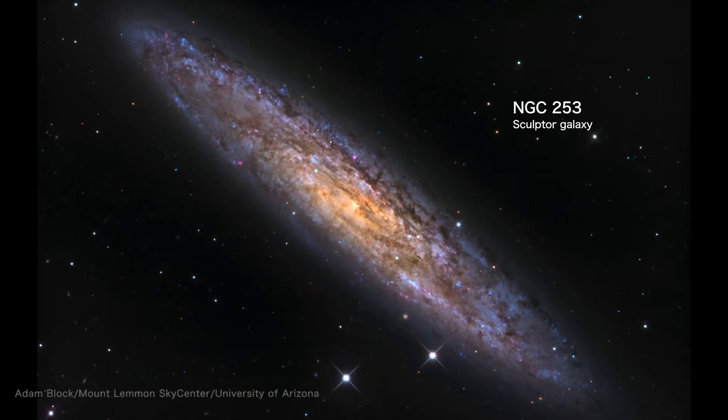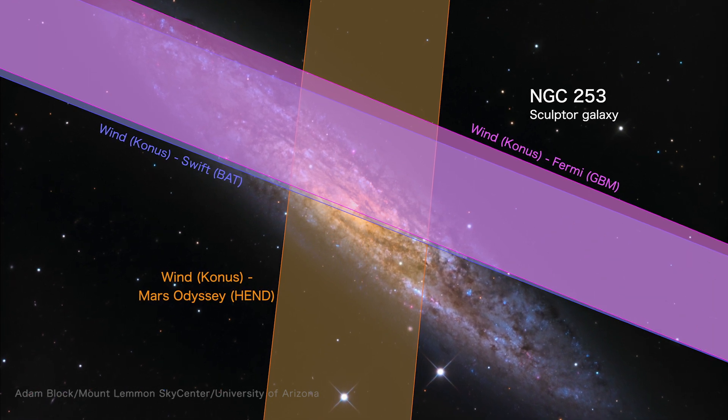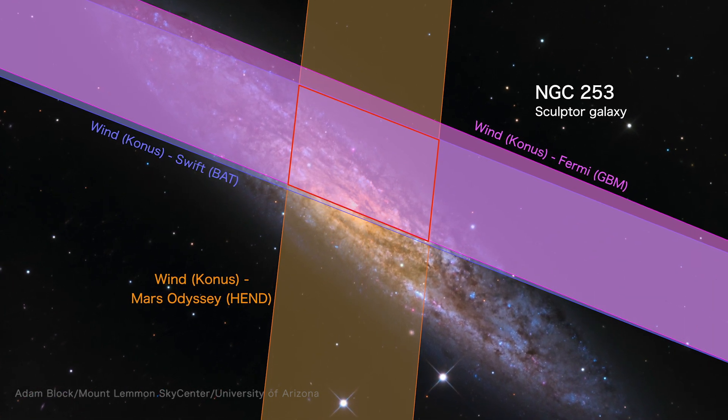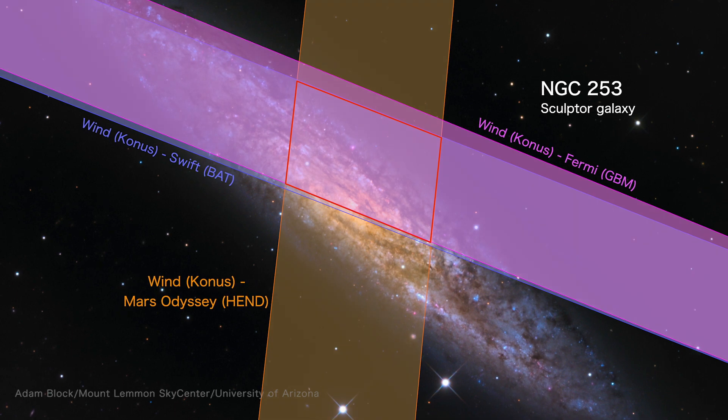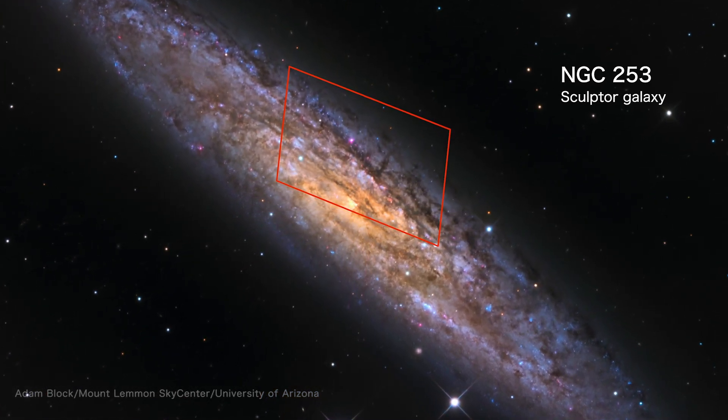Using the arrival times of the signal at different spacecraft, astronomers pinned the burst to NGC 253, a bright nearby galaxy. From start to finish, the event lasted just 140 milliseconds, as fast as a finger snap.